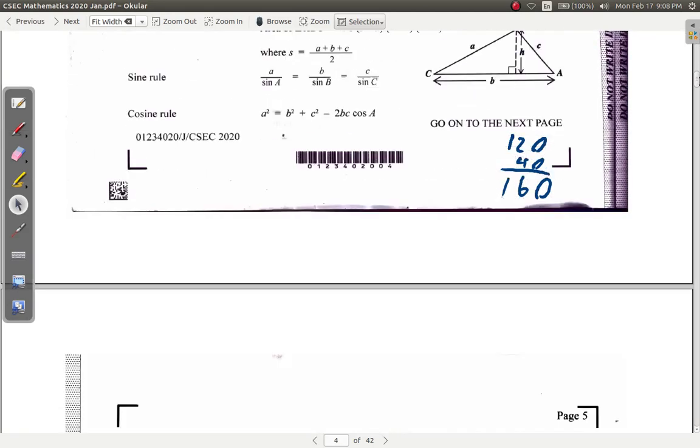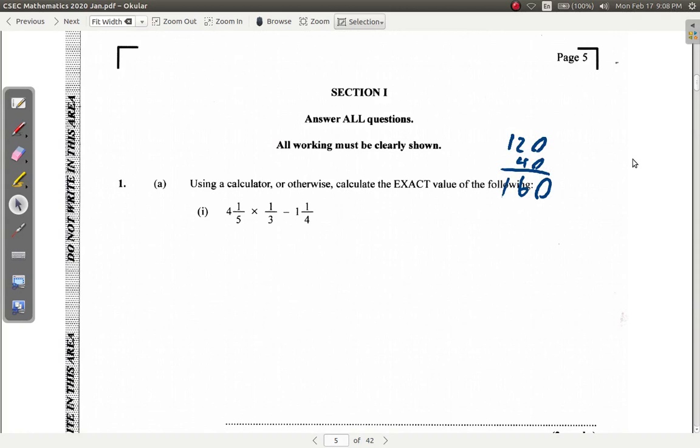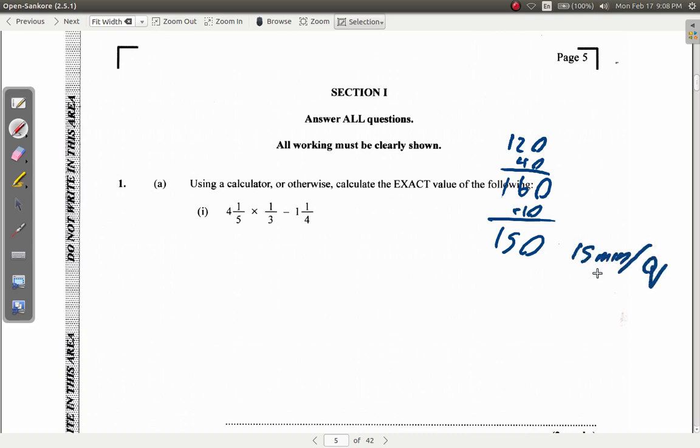And then, after ten minutes, you have 150 minutes remaining. So, ten minutes are gone. You have 150 minutes remaining. This essentially gives you 15 minutes per question. 15 minutes per question.